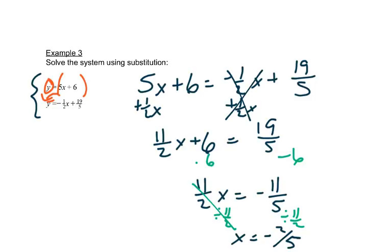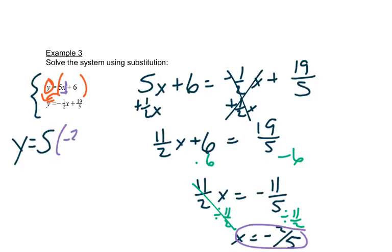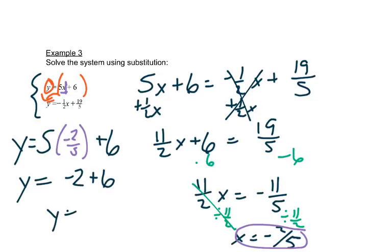Now we go back and plug x equals negative 2 fifths into either equation. The first equation without extra fractions looks easier, so I write y equals 5 times (negative 2 fifths) plus 6. You can do that multiplication in your calculator: 5 times negative 2 fifths is negative 2, plus 6 gives us 4. So our answer is written as the point (negative 2 fifths, 4).